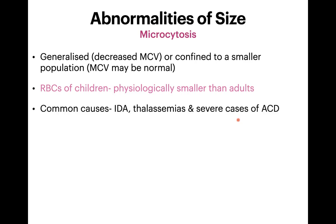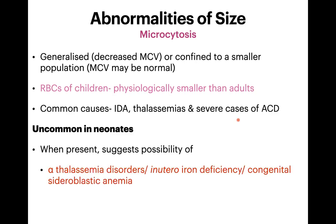The common causes of microcytosis are iron deficiency anemia, thalassemia, and severe cases of anemia of chronic disease. Anemia of chronic disease usually presents as normocytic normochromic, but when severe it can lead to microcytic hypochromic anemia. Microcytosis is very uncommon in neonates because their normal MCV is higher — regularly beyond 100 fL, even more so in preterm neonates. If microcytosis is found in a neonate, consider alpha thalassemia disorders, in utero iron deficiency, or congenital sideroblastic anemia.